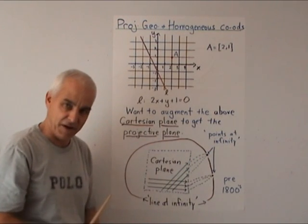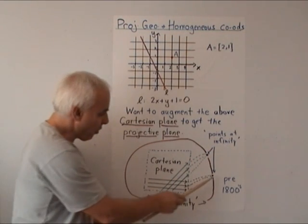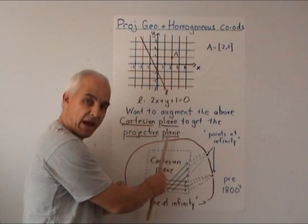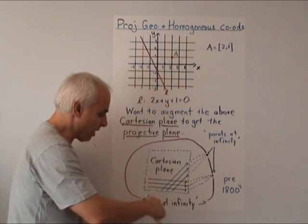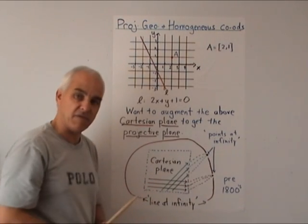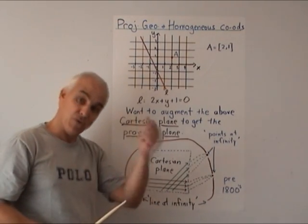A different family of parallel lines, say these ones here, will meet in another point at infinity. So we get a point at infinity for every family of parallel lines.